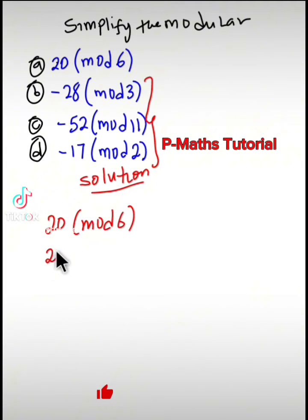we have 20 over 6. This would give us 3 remainder 2. Therefore the modulo is 2 mod 6, as simple as that.